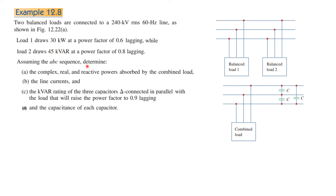The ABC sequence means that the phase voltage and phase current differ by 120 degrees from each other from the reference. What we have to find first is the complex, real, and reactive power absorbed by the combined load. Then the line currents and the kVAR rating of three capacitors delta-connected in parallel with the load.